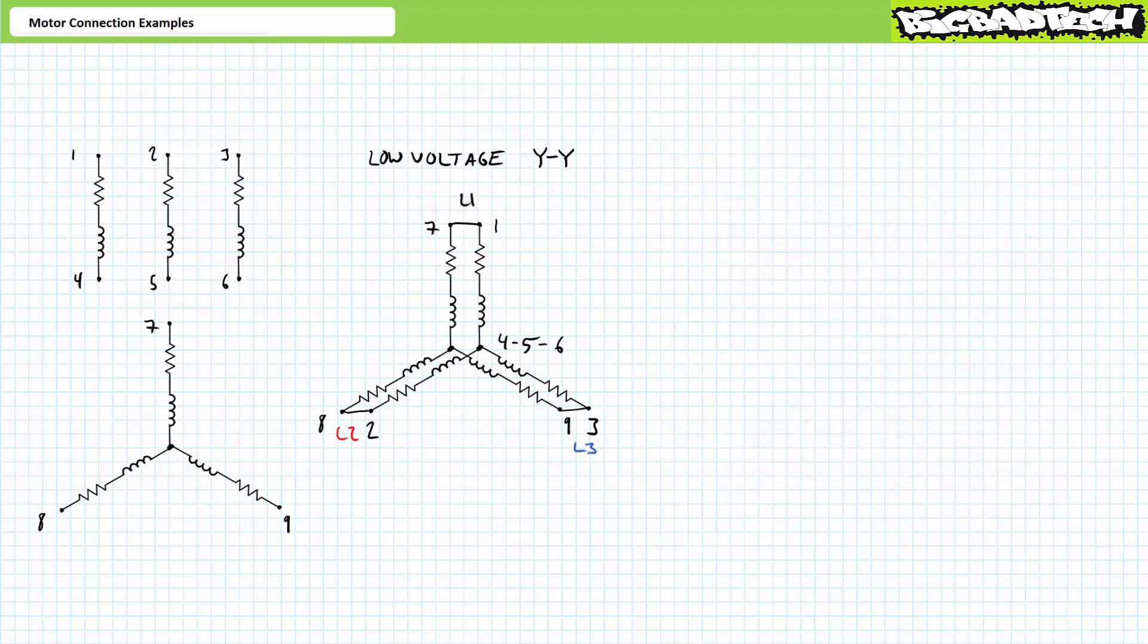I'm reasonably confident we properly wired this nine-lead Y configured motor in the low voltage YY configuration. All right, that wasn't too hard, was it? In summary, follow the motor connection diagram exactly as directed. If you want confirmation of your work, use an ohmmeter to check it.